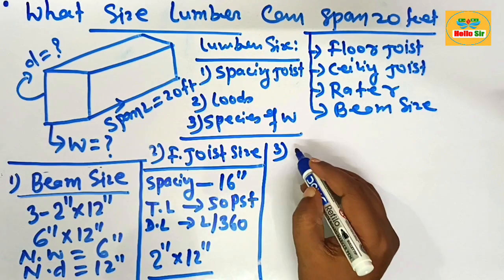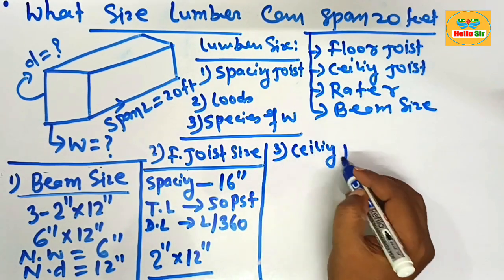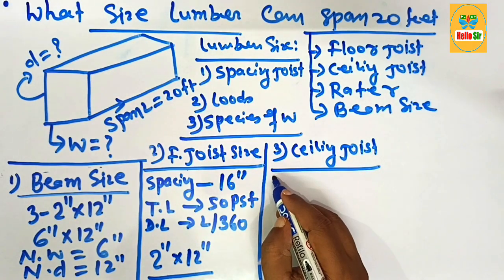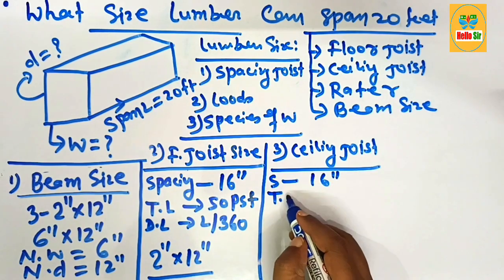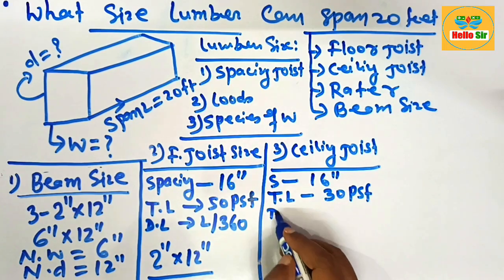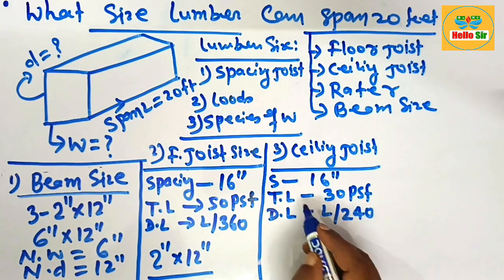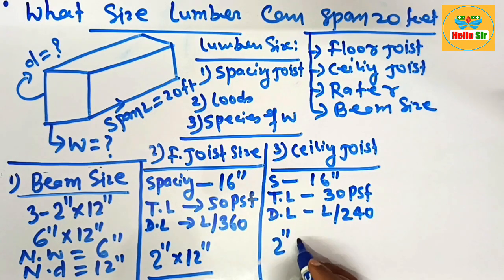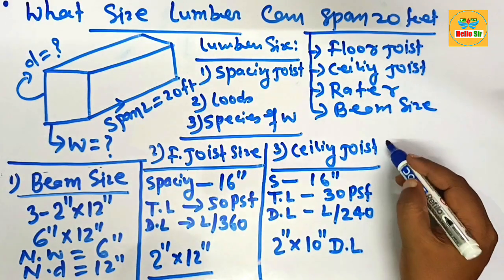The third point: what ceiling joist size is required to span 20 feet? At a spacing of 16 inches between the joists, a total load of 30 pounds per square foot acting on the structure, and a deflection limit of L/240, the ceiling joist size should be 2-inch by 10-inch dimensional lumber to span 20 feet.